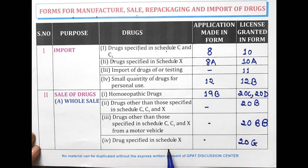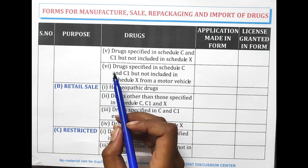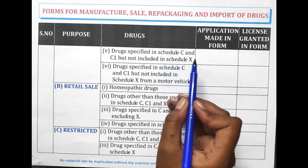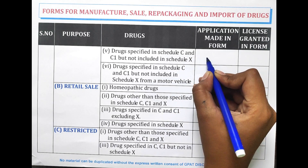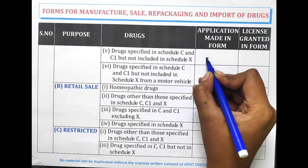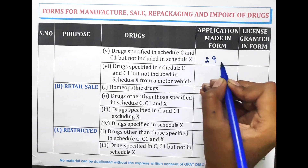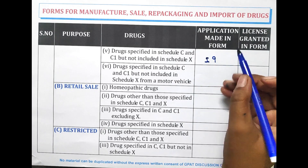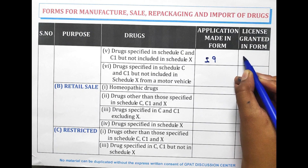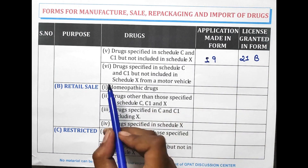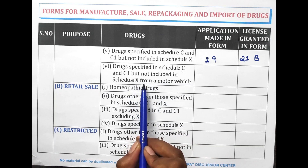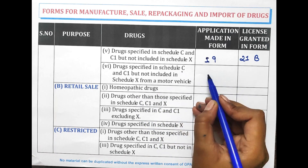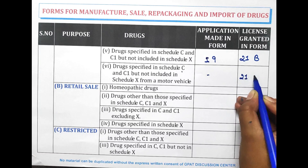For the wholesale of drugs specified in Schedule C, C1 and X, but not included in C and C1, the application is made in Form 19 and the license is granted in Form 21B. From a motor vehicle for wholesale of drugs specified in C, C1 and X, no application form needs to be filled but the license is granted in Form 21B.